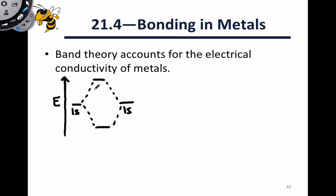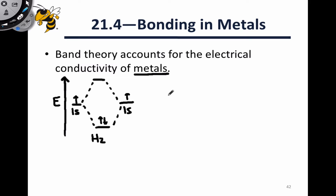There's a splitting that goes on from the atomic to the molecular orbitals. Since we're looking at valence atomic orbitals, typically we end up with electrons within the bonding orbital while the antibonding orbital is empty. This is for a diatomic such as H₂.